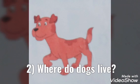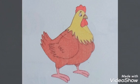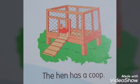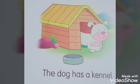Second question. What is this? Dog. And do you know where do dogs live? Dog is a pet animal. Where do dogs live? Dogs live in a kennel. Dog ki ghar ki naam kya hai? Kennel. Dogs live in a kennel. Once again, where do hens live? Hens live in a coop. Where do dogs live? The dogs live in a kennel.